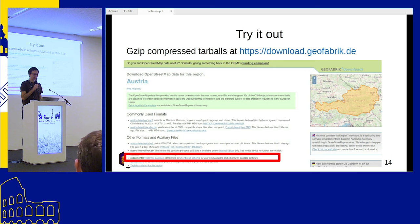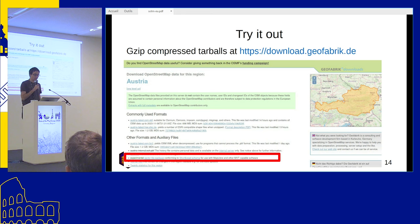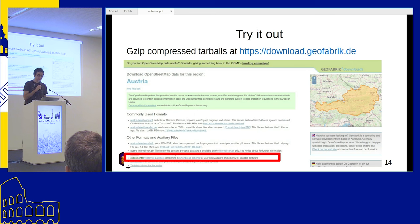You can try the vector tiles out — they are available for download at download.geofabrik.de. It's a little hidden and only available for the extracts. If you go into an individual country's page, for example Austria, look into the section 'Other Formats and Auxiliary Files' and you will find a link there.